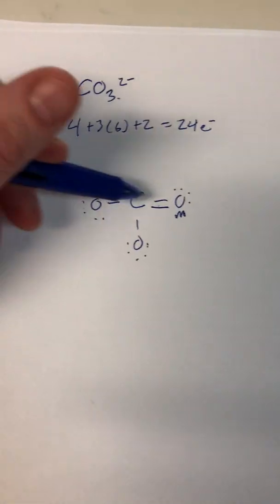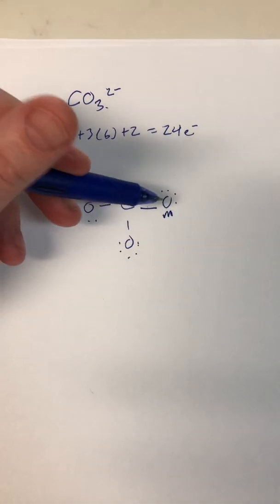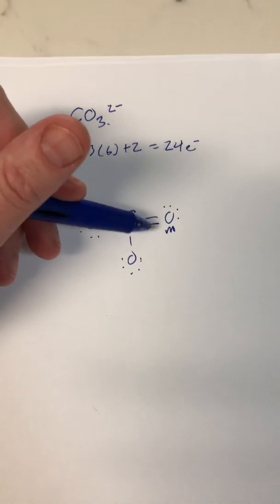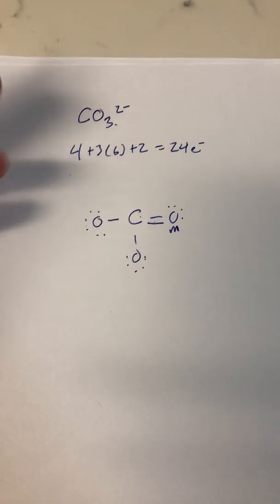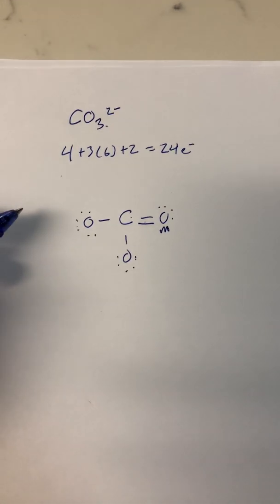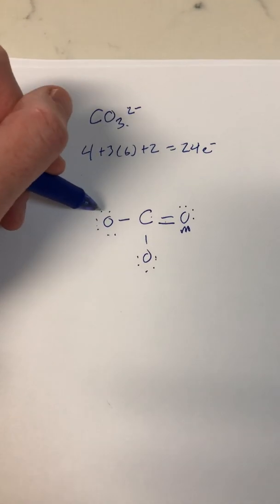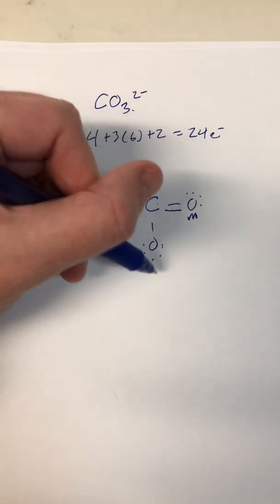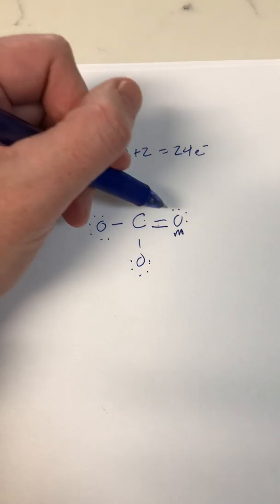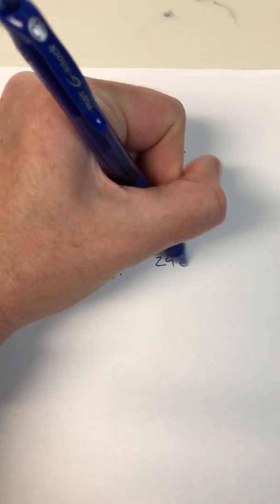So now let's go ahead and count again. Everything has an octet at this current point in time. This oxygen is happy because oxygen wants to make two bonds. And if we count all these — 2, 4, 6, 8, 10, 12, 14, 16, 18, 20, 22, 24 — we now have 24 electrons.